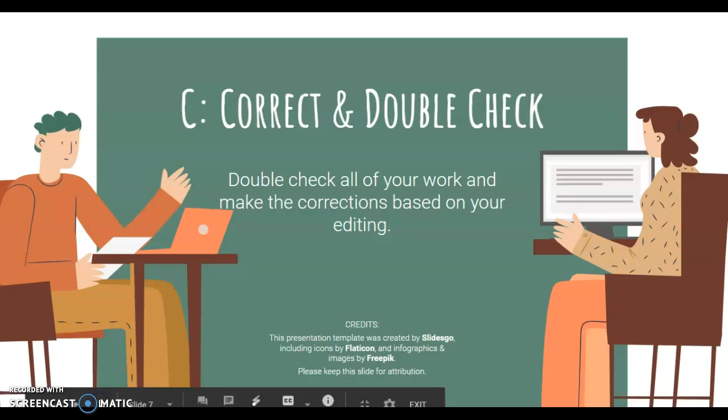C, correct and double-check. Double-check all of your work and make the corrections based on your editing. So, if you're doing this on paper, then this is where you're going to start rewriting. If you're doing this on the computer and someone has edited and put comments on the side, this is where you're going to go through and resolve all of those comments and make the changes that are necessary to meet your writing goals.